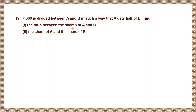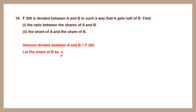First, let's find the ratio between the shares. Let the share of B be x — we put B first because A is defined as half of B. So the share of A will be half of x, that is x by 2. Now to find the ratio A is to B, that is x/2 divided by x.